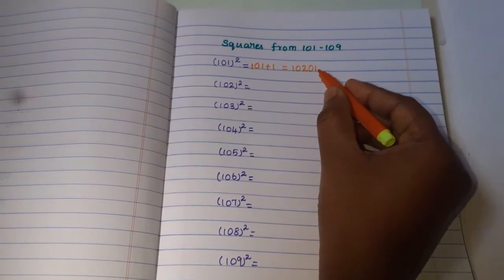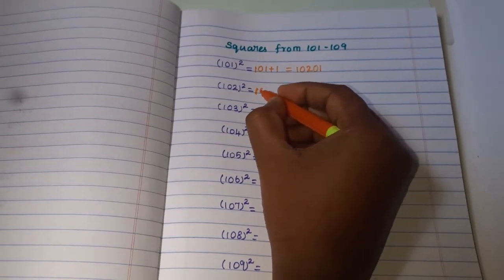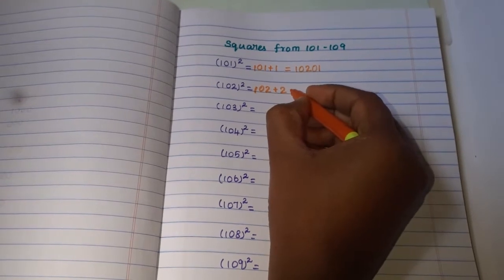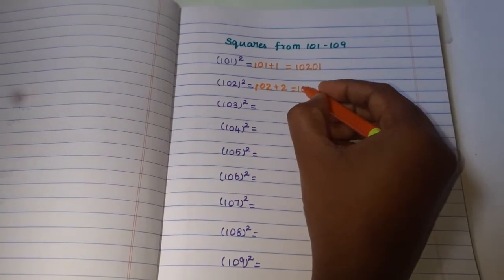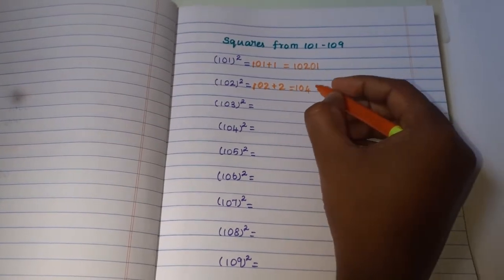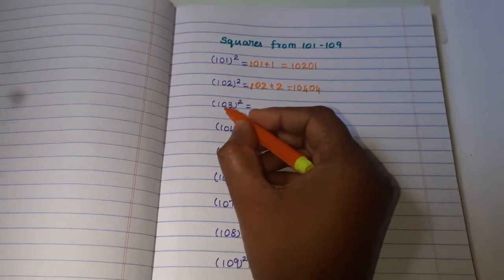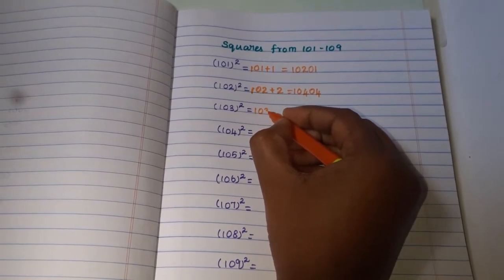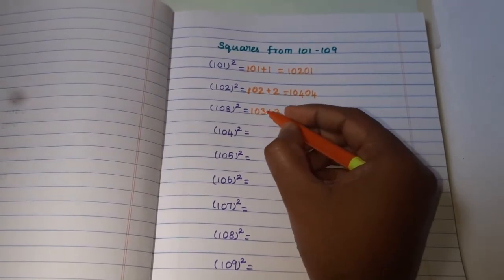Next, write the given number 102 plus unit place 2. 102 plus 2 is 104. 2 square is 4, write 04, 2 digits. So 103 square is: write 103 plus 3 is equal to 106. 3 square is 9, so write 09.